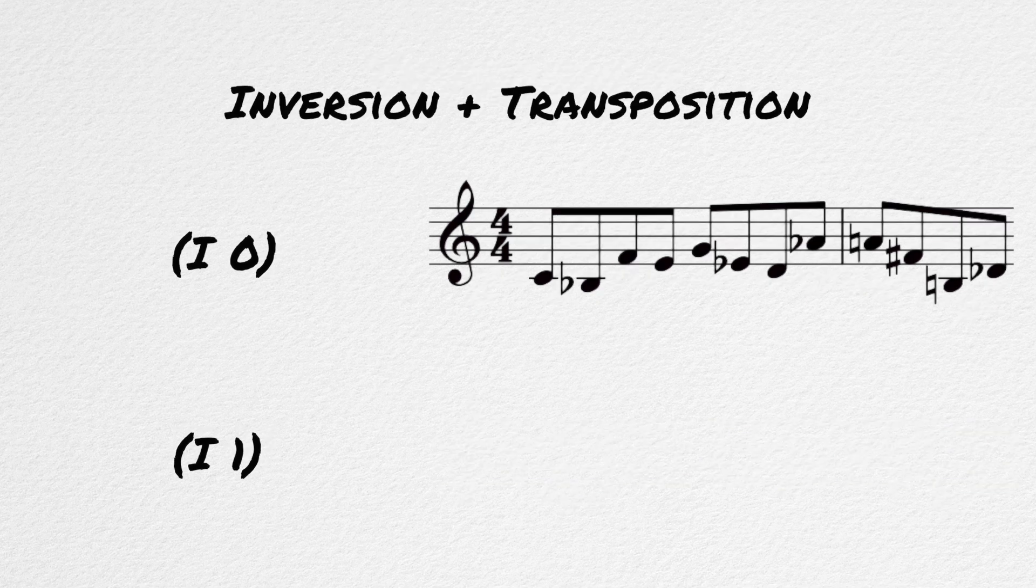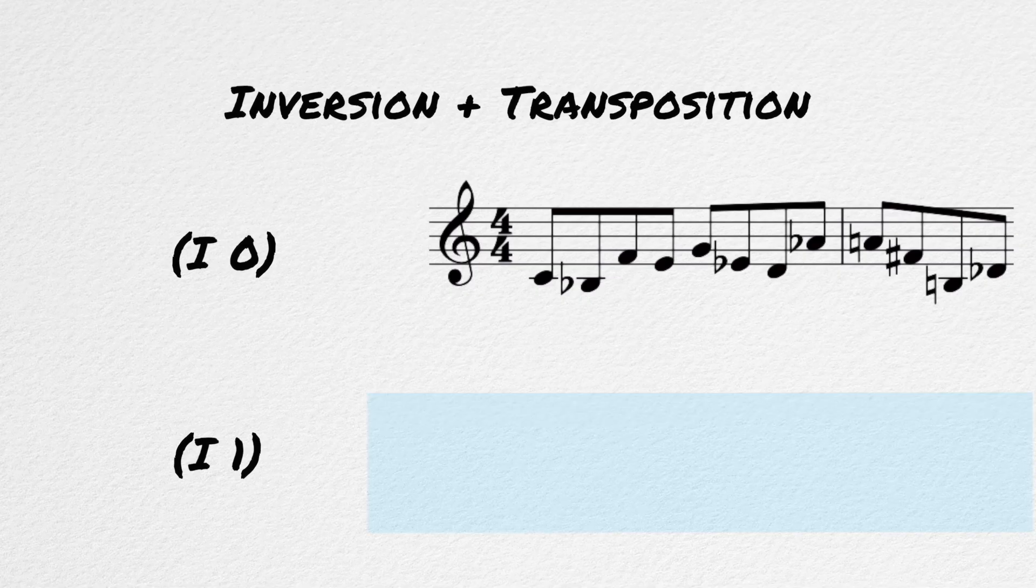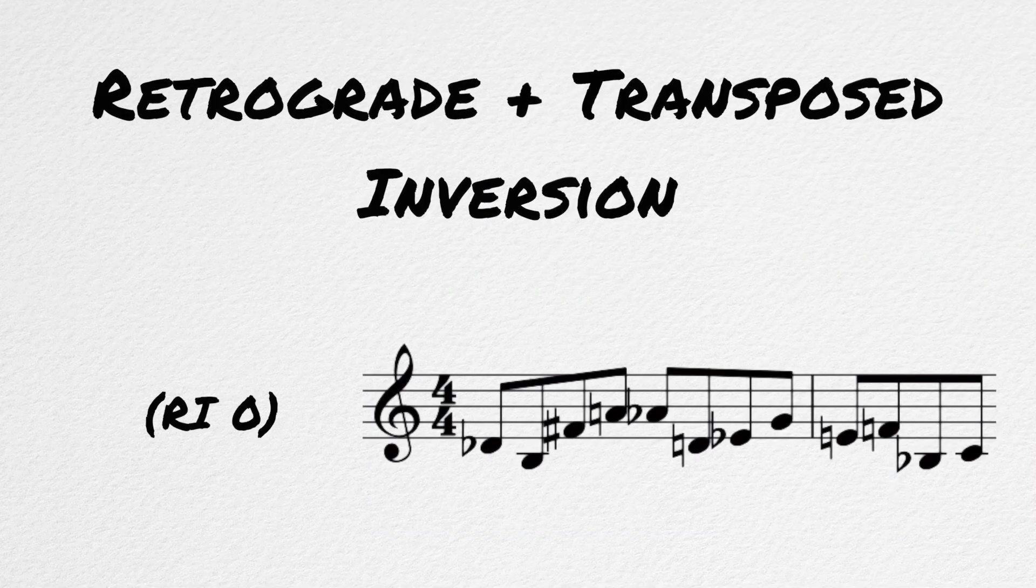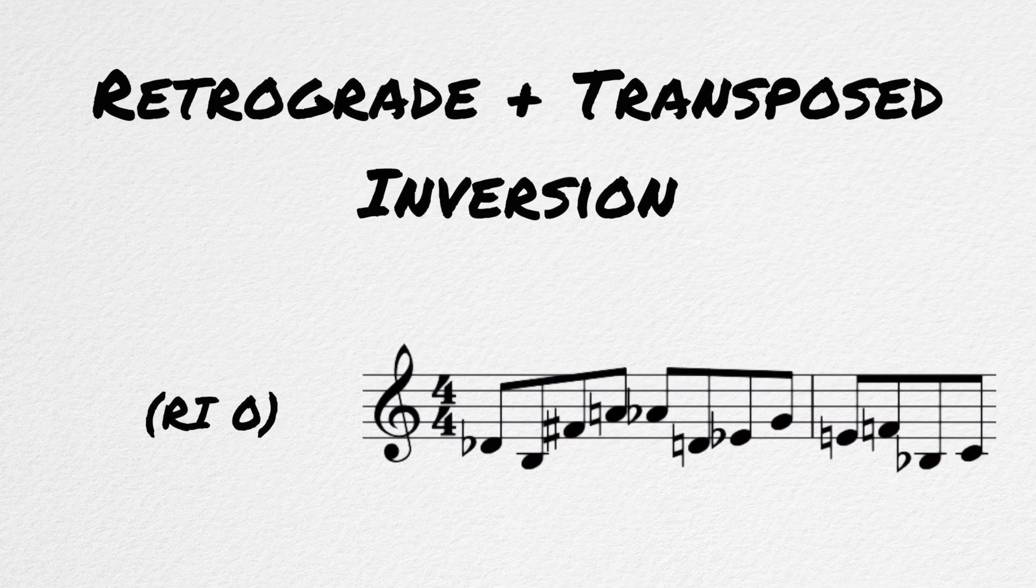This can also be transposed up and down as many half steps as you would like. The inversion can also be retrograded and transposed, which opens up even more possibilities. The retrograde inversion, RI0, would look like this.